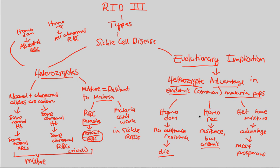So this is our idea behind sickle cell disease — I find this fascinating. The idea that heterozygotes are at this distinct advantage so long as we're looking at endemic malaria populations. These are the following results from that conclusion. I love this genetic stuff and this evolutionary implication. Hopefully, you have a better understanding and appreciation for the complexity of something like sickle cell disease.